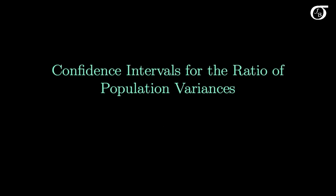Let's look into confidence intervals for the ratio of population variances. We're going to come up with a method of constructing confidence intervals for sigma 1 squared over sigma 2 squared.